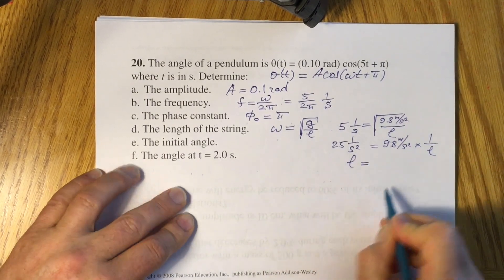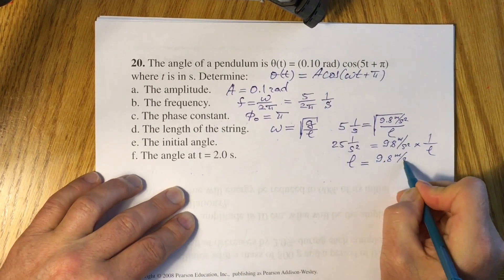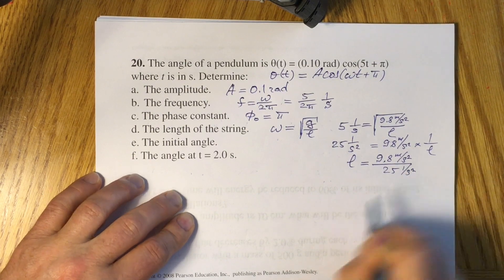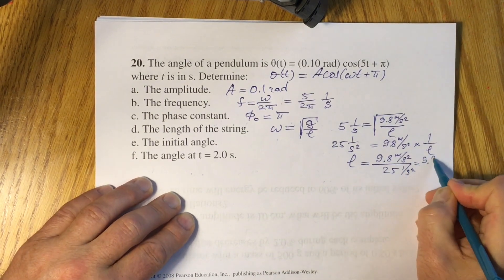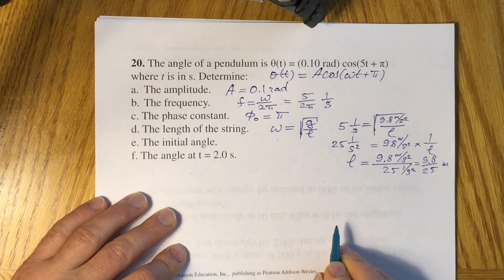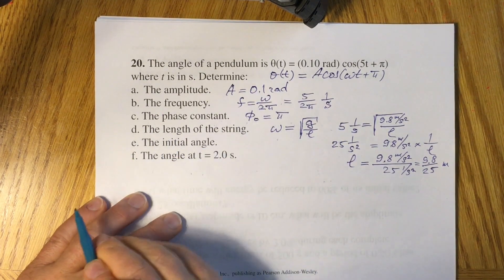So your L will be equal 9.8 meter per second squared divided by 25, 1 over second squared, or 9.8 divided by 25 meters. So we did solve item D.